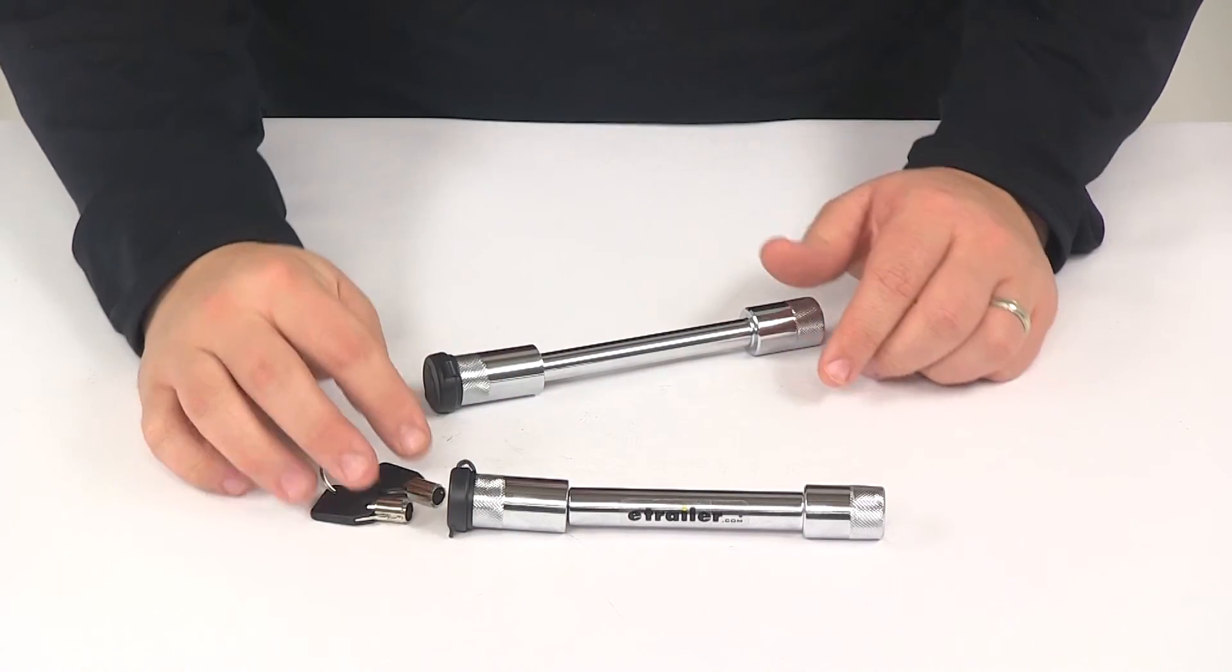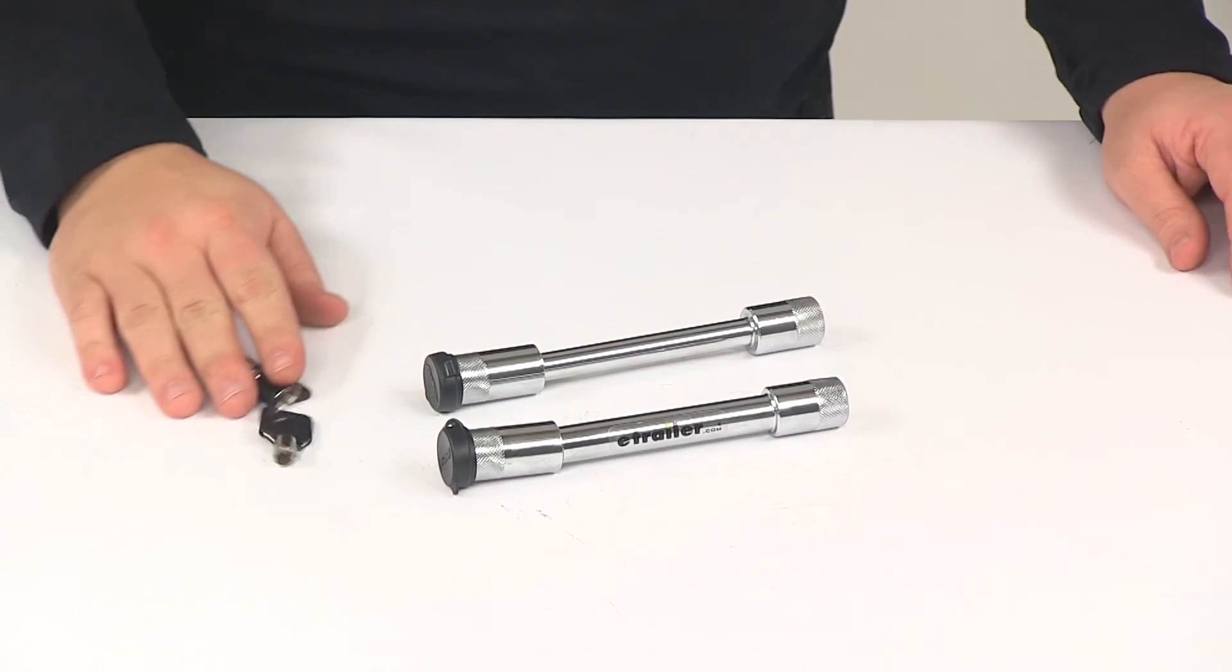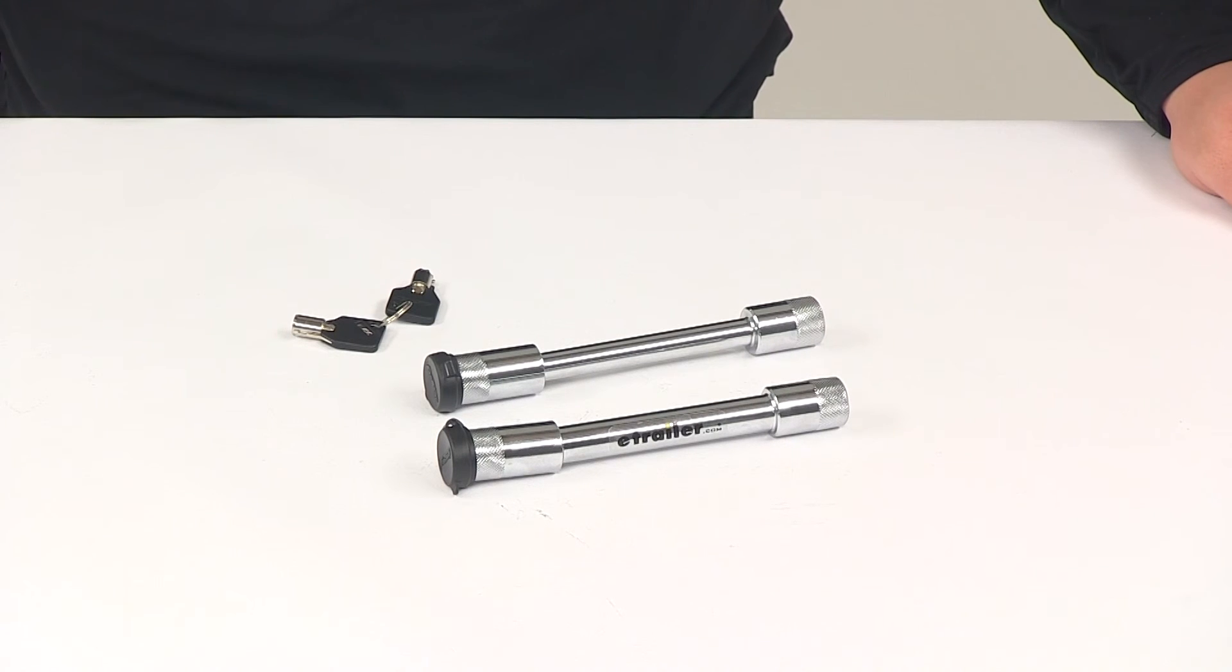These products are also covered with a limited lifetime warranty. That's going to do it for today's look at the Fastway trailer hitch lock and adjustment pin lock set for the Flash E-Series ball mounts.